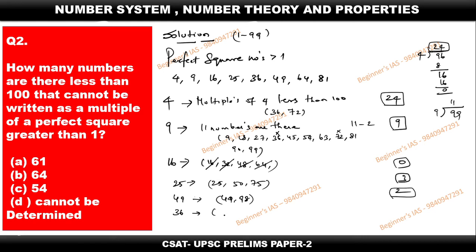For multiples of 36: 36 and 72 are both already present in the multiples of 4, so we take 0. Multiples of 64 are also present in the multiples of 4, so 0 again. For 81: the only multiple less than 100 is 81 itself, but 81 is already counted in the multiples of 9, so we take 0. Therefore, add 0 for 36, 64, and 81.